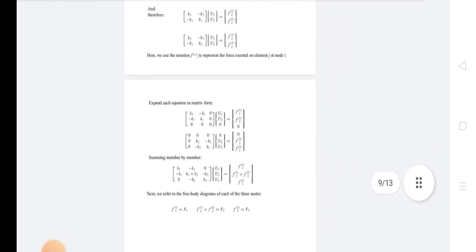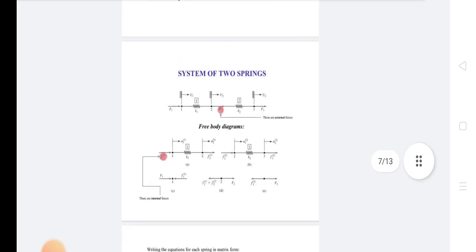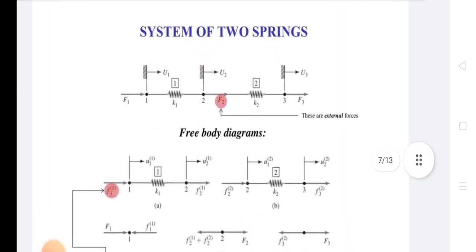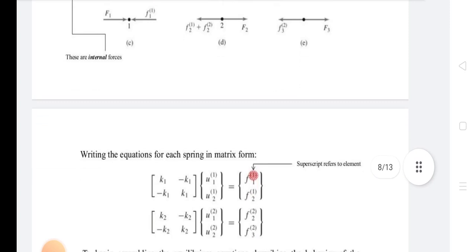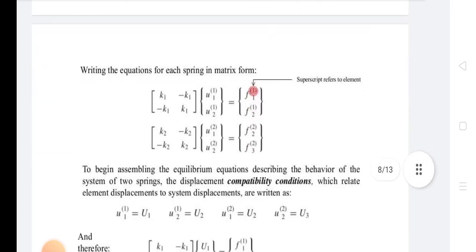This is the integer. System of two springs: that is K1 and K2. Displacement U1, U2, U3. Forces F1, F2, and F3 are shown. This is the free body diagram of this system. Writing the equation: this is the equation K1, minus K1, minus. This is for two springs. By being assembly, the equilibrium equations describe the behavior of the system of two springs.